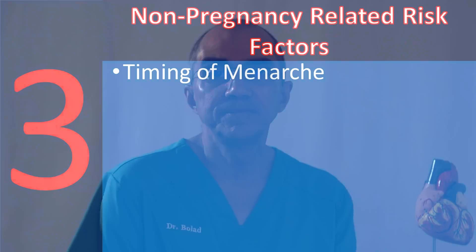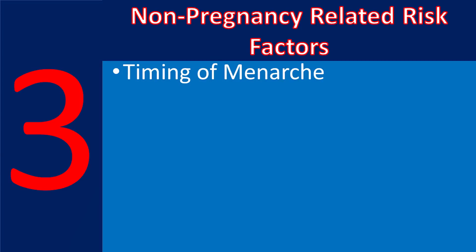These include timing of menarche — either early or late menarche appears to be associated with future cardiovascular disease risk. Early menopause, occurring at less than 40 years, whether surgically, naturally, or chemically induced, is associated with increased risk of cardiovascular disease in women.